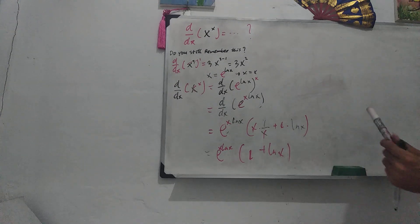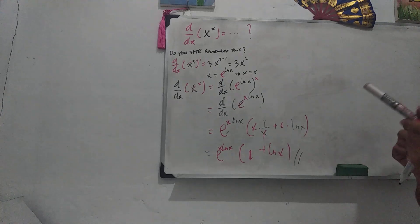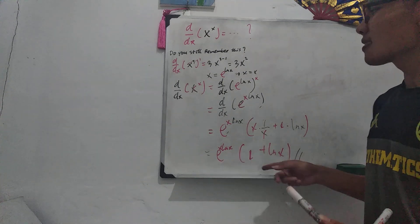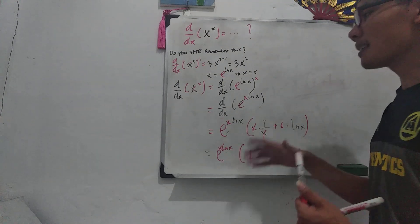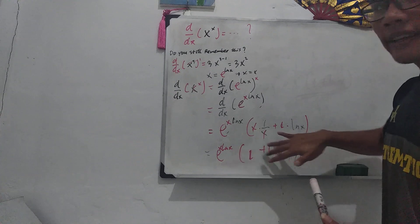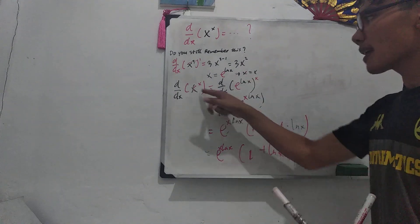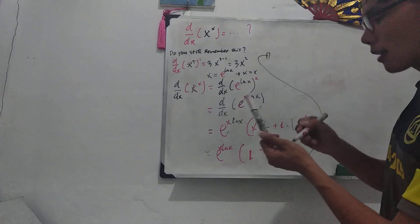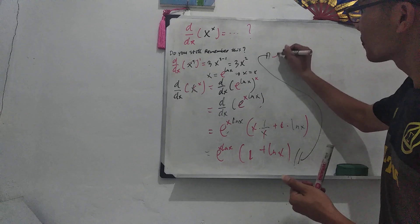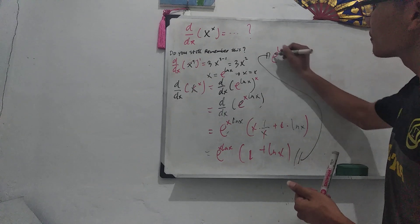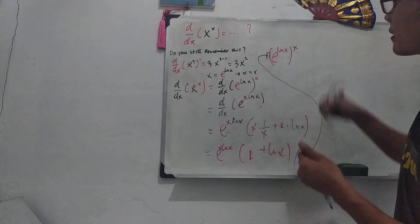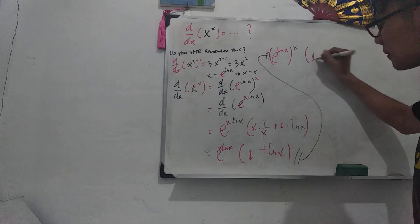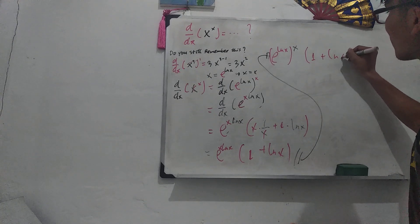So that is the result, okay? Interesting, isn't it? Okay, but we can still simplify this by bringing this to our initial function, this x to the power of x. So we will make like this, e to the power of ln x, really the same as this, right? This one is the same as this, multiplied by 1 plus ln x.